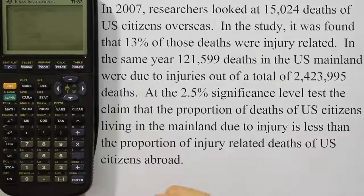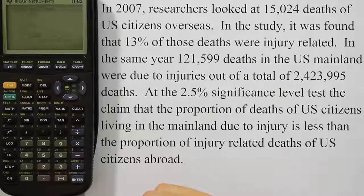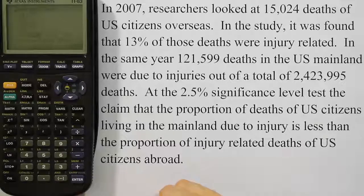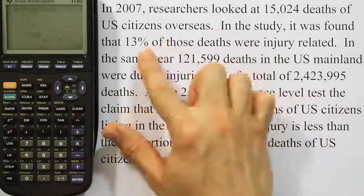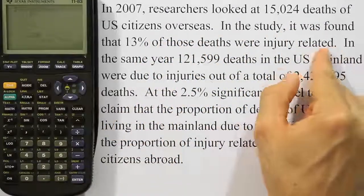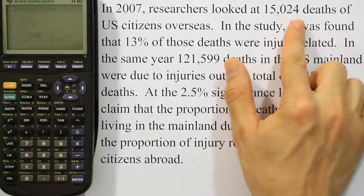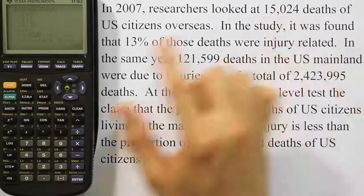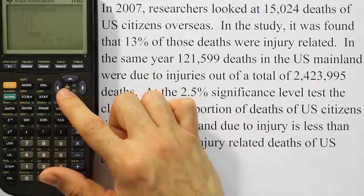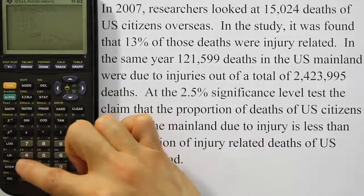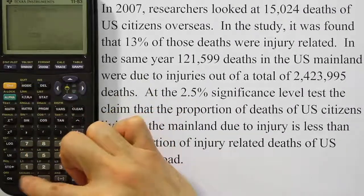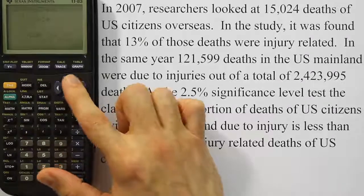The calculator gives us a list: x1, n1, x2, n2 — that's the data it wants us to enter. Looking at the problem, we have 15,024 deaths of US citizens overseas, so that's the n for the overseas group. I'll type in 15,024 for n1.